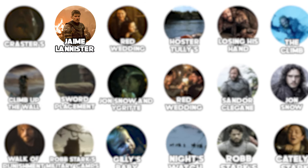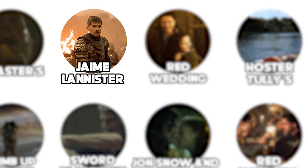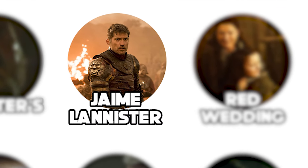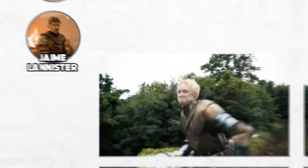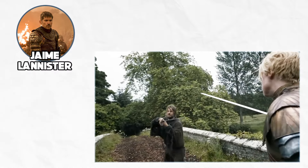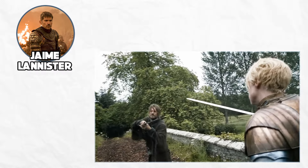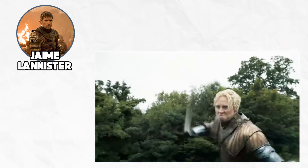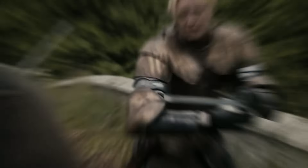In Episode 2, during Jaime Lannister's intense fight with Brienne of Tarth, continuity errors occur in the positioning of Jaime's sword. At one point in the scene, the sword is angled upward and away from Brienne's arm. In the next shot, the sword is suddenly resting along her arm without any natural transition. This mistake interrupts the flow of the fight, which is otherwise a well-choreographed confrontation between two formidable characters.